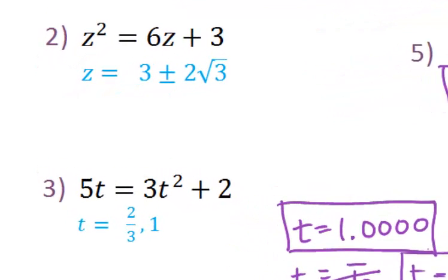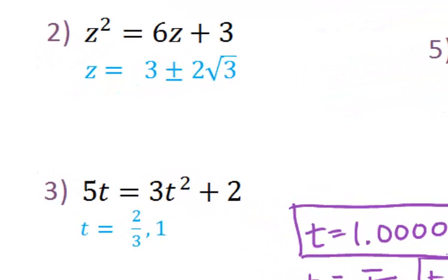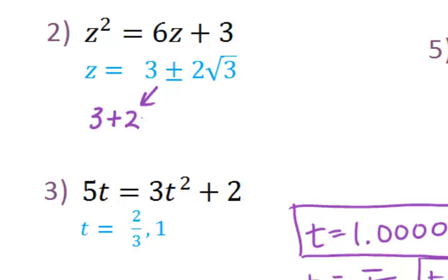Example number 2 is a perfect example of why we need to convert to an approximate solution. For most of us, we do not know what 3 plus 2 root 3 is at all — if we had to estimate it, we wouldn't even know where to start. So we need to figure out what the decimal is close to it. We need to split this up into our two solutions: one being positive 3 plus 2 square root 3, and the other being negative 3 minus 2 root 3.